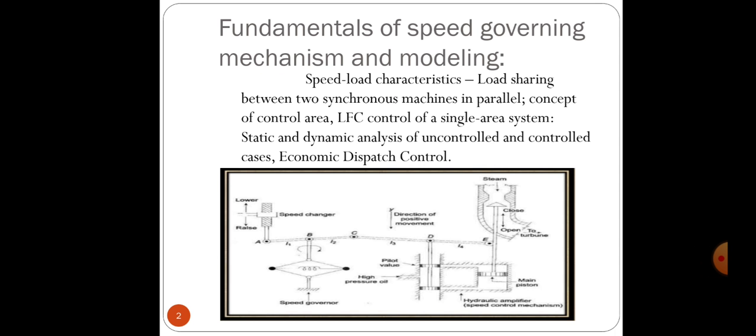The speed governing system consists of proportional regulator, speed relay, and a servo motor controlling the gate opening. It is similar to one of the models proposed in the steam turbine has four stages, each modeled by a first order transfer function.